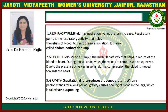Cardiac output increases during inspiration. The respiratory pump is the respiratory activity that helps the return of blood to the heart during inspiration. It is also called the abdominal thoracic pump. The second factor is muscle pump — muscular activity that helps in return of blood to the heart. During muscular activities the veins are compressed or squeezed, and due to the presence of valves in the veins, during compression the blood is moved towards the heart.